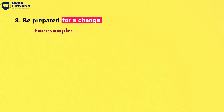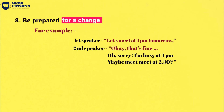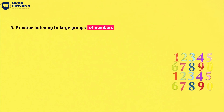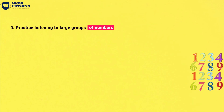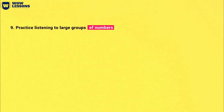Be prepared for changes. Very often, speakers can change information in audio recordings. For example, one speaker says 'let's meet at 1 pm tomorrow,' and another speaker says 'okay, that's fine,' then says 'oh sorry, I'm busy at 1 pm, maybe meet at 2:30.' You must be prepared for such changes — don't relax immediately after you hear the answer to the question; continue to listen carefully. Practice listening to large groups of numbers. Often in the first section of the listening, there is a task where you need to write a phone number, date, or hours of work. Very often the numbers and dates are pronounced rather quickly, and you should not hope that they will be repeated again. Therefore, it will be very helpful to practice listening to numbers before the test.